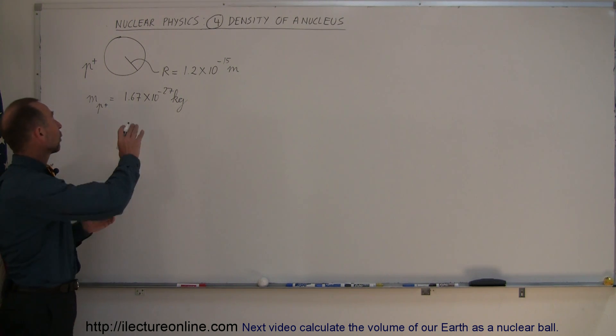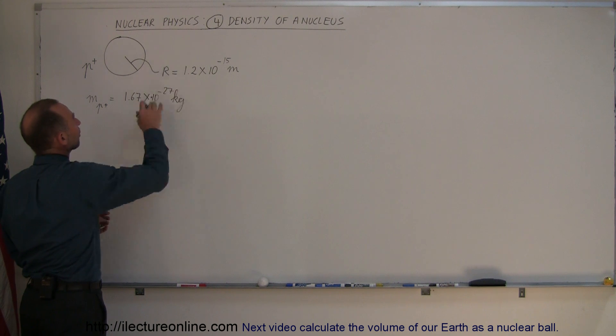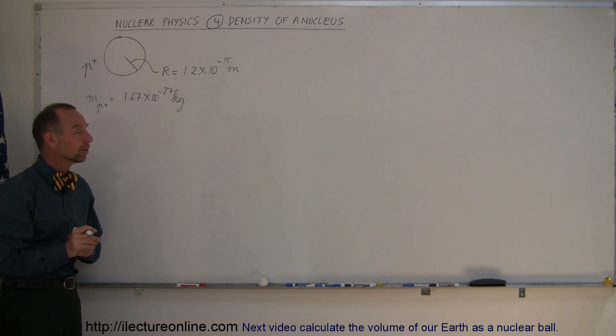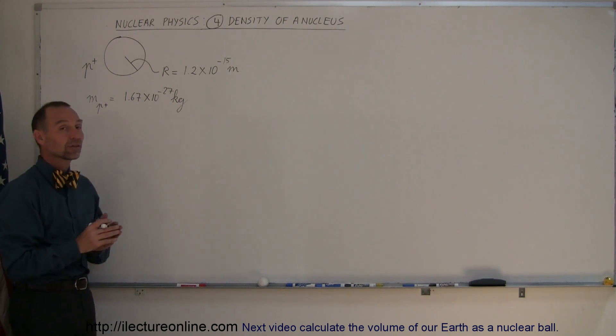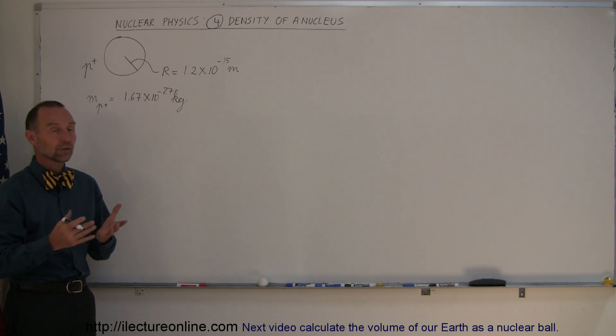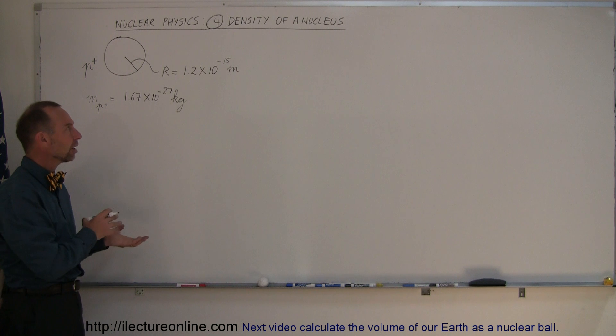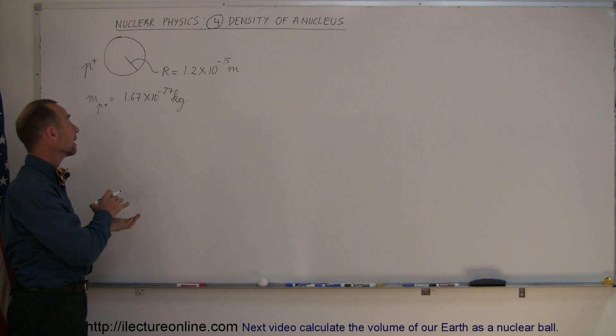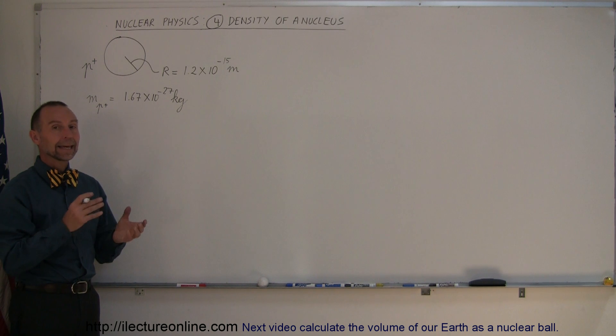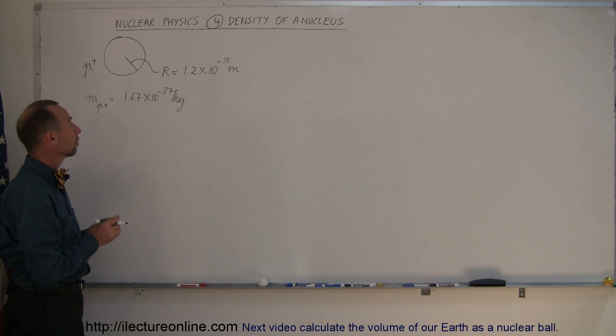Starting out with a single proton, it has a radius of 1.2 times 10 to the minus 15 meters, and the mass of a proton is 1.67 times 10 to the minus 27 kilograms. What is the density of a single proton, which would be the density of the nucleus of any atom? We saw that the volume of the nucleus was proportional to the volume of a proton and the number of nucleons in the nucleus.